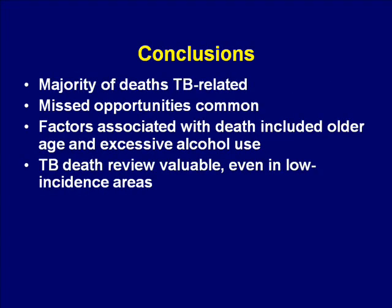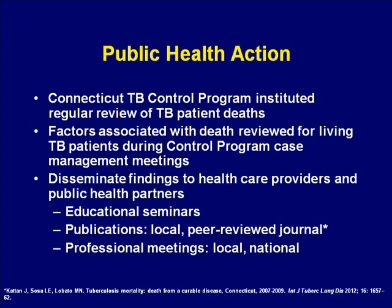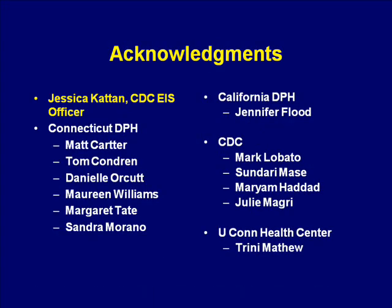In conclusion, the majority of deaths in the study were determined to be TB-related, and missed opportunities were common. Factors associated with death included older age and excessive alcohol use, consistent with similar studies. The value of this type of analysis allows for situational awareness of TB mortality trends and can guide death prevention interventions. This project has led to several actions: the Connecticut TB Control Program has now instituted regular review of TB patient deaths, and factors associated with death including age, comorbidities, and alcohol use are reviewed for living patients during case management meetings. These findings have been disseminated widely through educational sessions, including a state TB conference in October 2012, national scientific meetings, and the findings were recently published in the International Journal of Tuberculosis and Lung Disease.